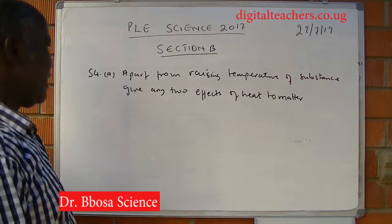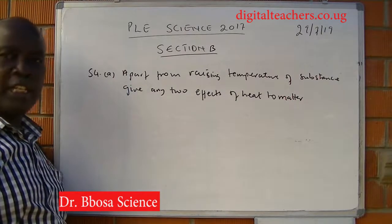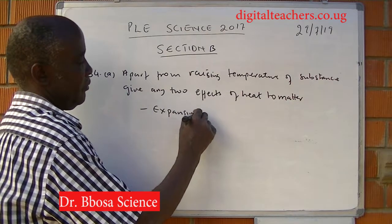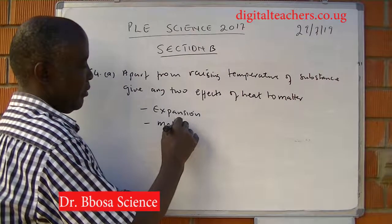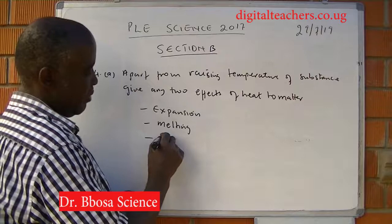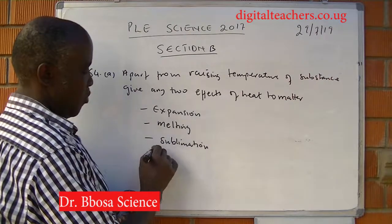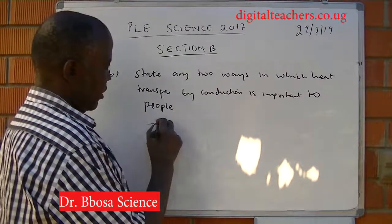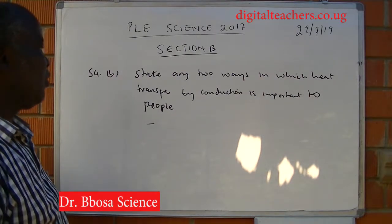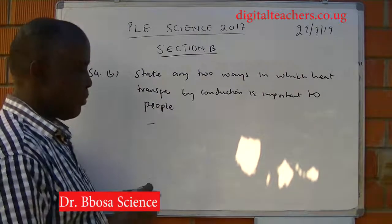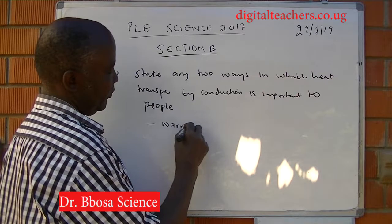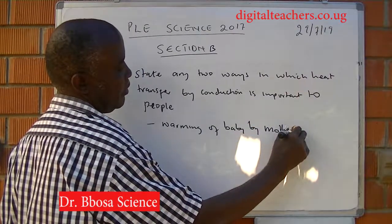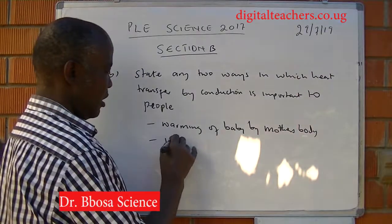Number 54a: apart from raising the temperature of a substance, give any other effects of heat on matter. Heat may cause expansion, melting, sublimation, or evaporation. Part B: state any two ways in which heat transfer by conduction is important to people. Warming of a baby by the mother's body, and ironing of clothes.